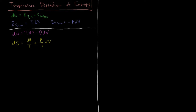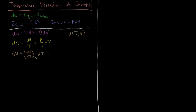If we want to write the total differential of U, where U is a function of temperature and volume, then dU is going to equal the partial derivative of U with respect to T at constant volume, times dT, plus the partial derivative of U with respect to V at constant temperature, times dV. This is how you write the total differential for a multivariable function from multivariable calculus.